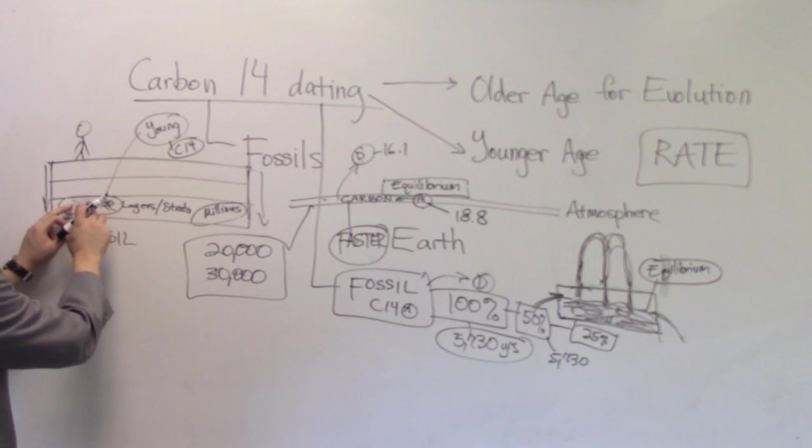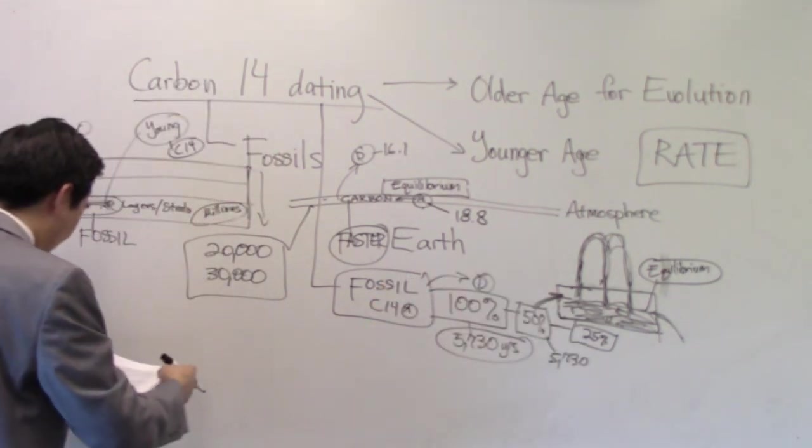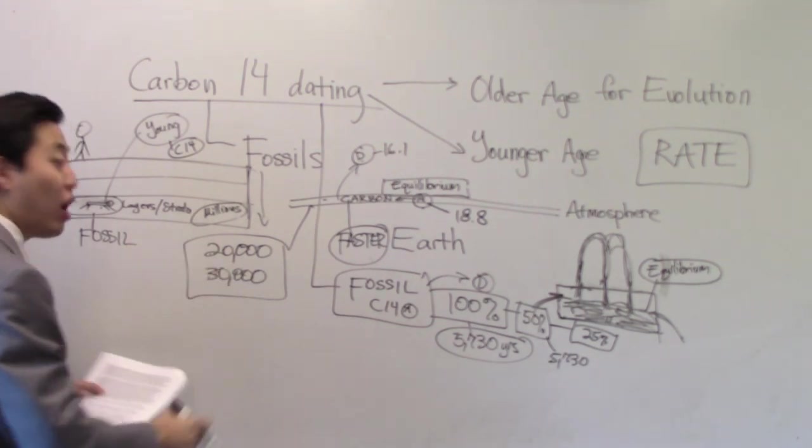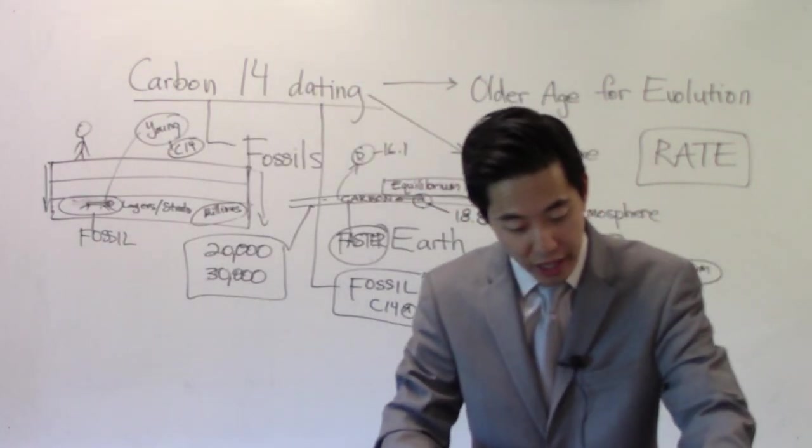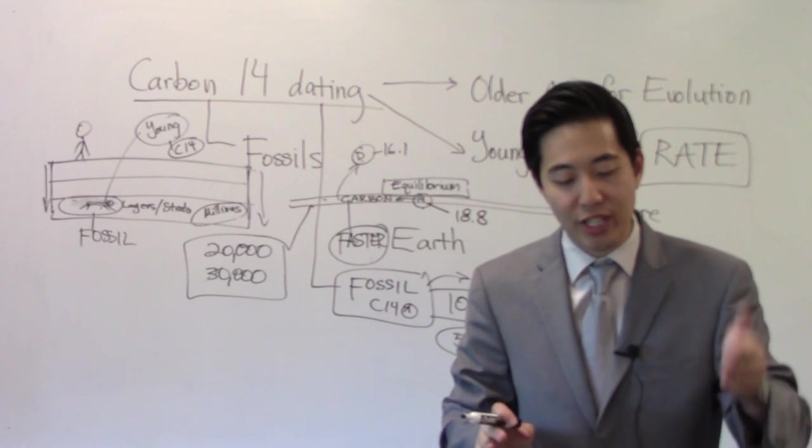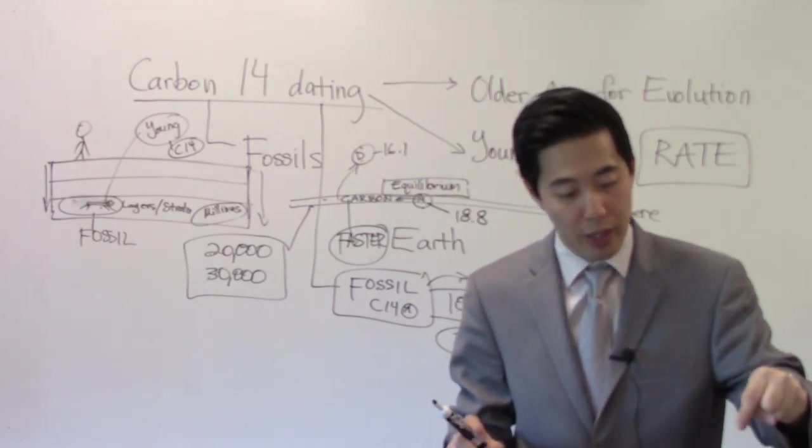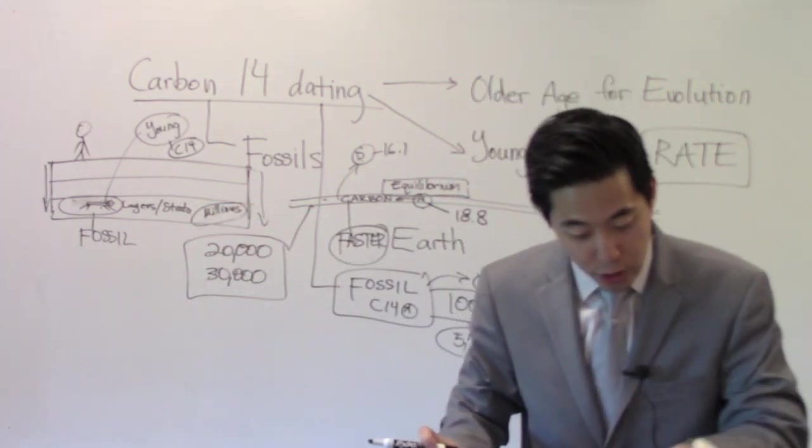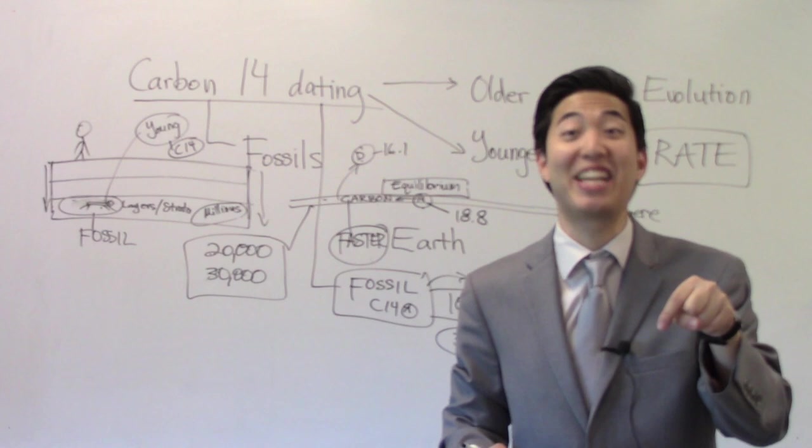But here's the problem. These fossils in this particular strata, which should be millions of years old, they said right here that they found all contained measurable amounts of 14C. That means it's what? Less than millions of years old, see? If they still found quite measurable amounts. Let's keep reading. In all cases, careful precautions were taken to eliminate any possibility of contamination from other sources. So, this is genuine.